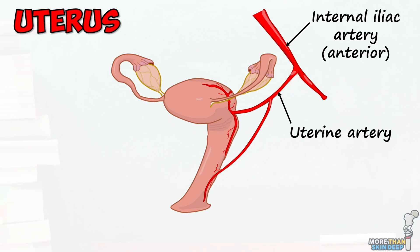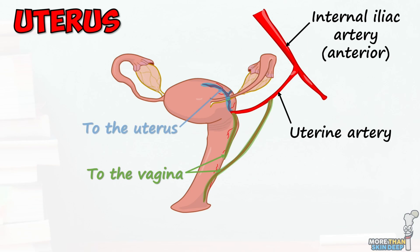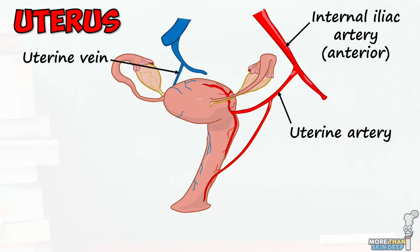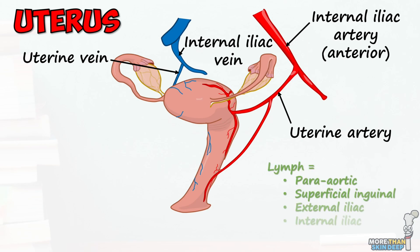The uterine artery produces three branches, two of which go to the vagina, and one of which ascends to supply most of the uterus and the proximal part of the fallopian tubes. Blood drains from the uterus into the uterine venous plexus, which passes into the uterine vein and then the internal iliac vein. Lymph drains into a range of nodes, including the para-aortic, superficial inguinal, and external and internal iliac.